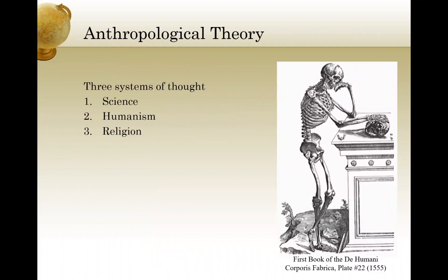So what is anthropological theory? Anthropological theory is wrapped around the three main systems of thought that have existed with humanity for centuries. The first is the scientific tradition. The second is humanism. And the third is religion. All three of these have contributed to the discipline of anthropology, because all three are overarching ways of seeing the world. They frame our worldviews as individuals, and in many instances contribute to conflict and disagreements among people who adhere to one of these three different schools of thought.